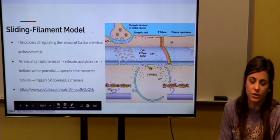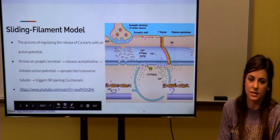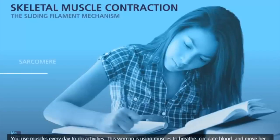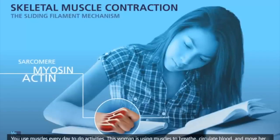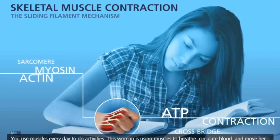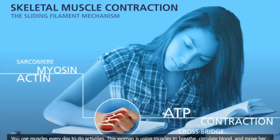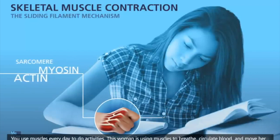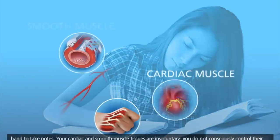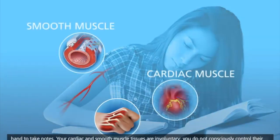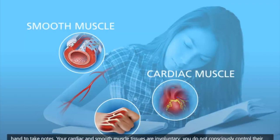And we're going to show a short video that explains that process in a little more depth. You use muscles every day to do activities. This woman is using muscles to breathe, circulate blood, and move her hand to take notes. Your cardiac and smooth muscle tissues are involuntary. You do not consciously control their actions. Skeletal muscle works under voluntary control.